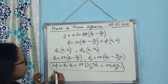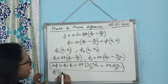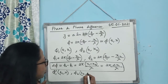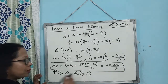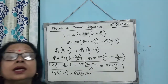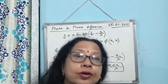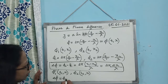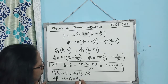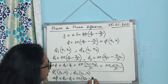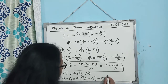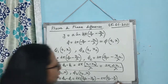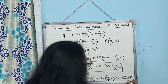Now consider two particles at different times but at the same position. I have taken different times t₁ and t₂ but the same position x. The phase difference φ₂ minus φ₁ = 2π(t₂/T minus x/λ) minus 2π(t₁/T minus x/λ). The 2πx/λ terms cancel, and you are left with 2π·Δt/T.